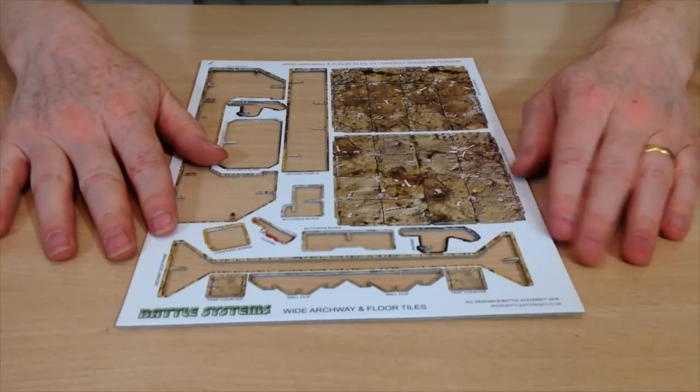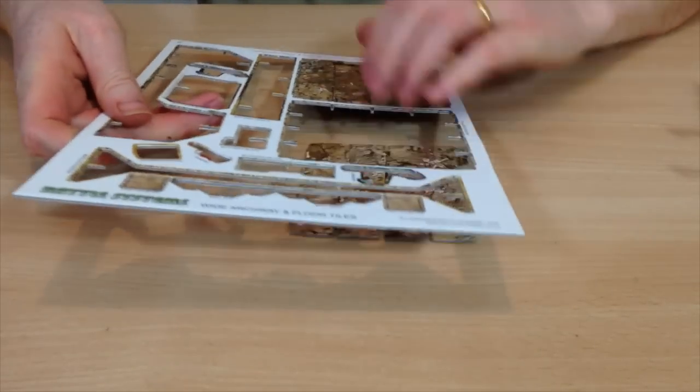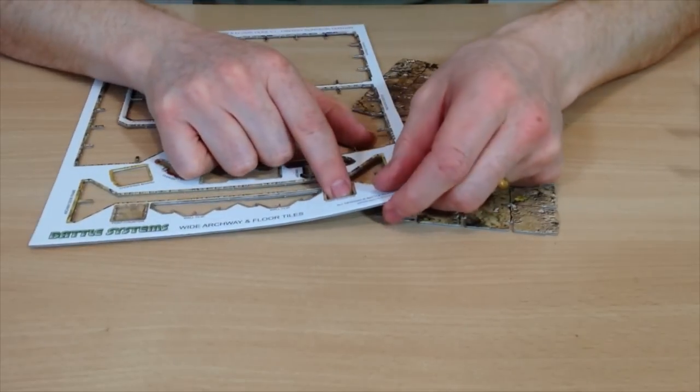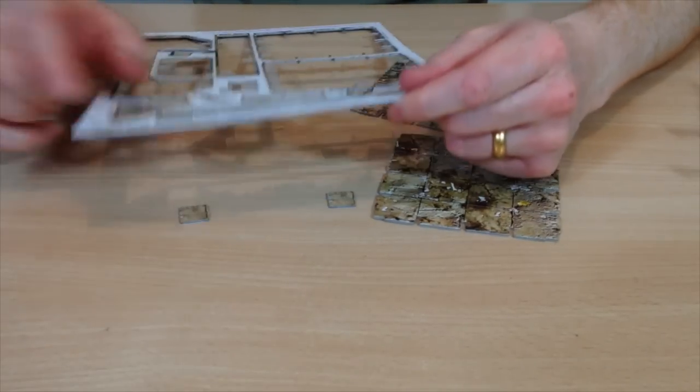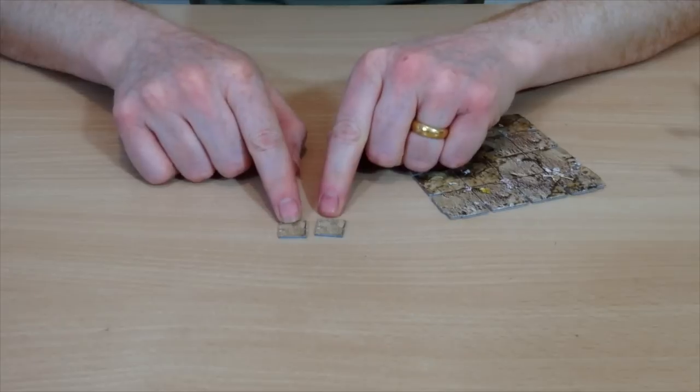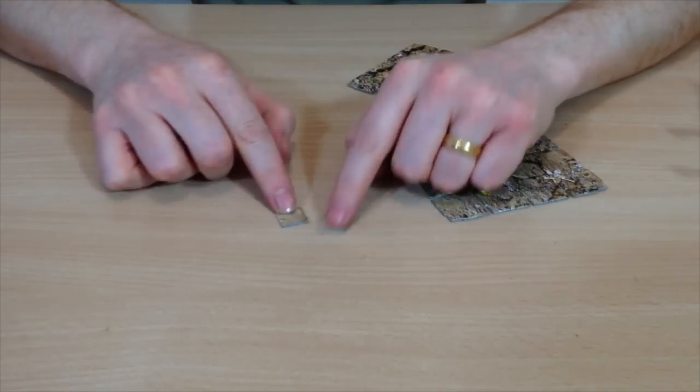All that leaves on here then are your bigger floor tiles which come in very handy. And actually because we had a little bit of space that we couldn't really do much with at all, we've got these two mini trap counters. One's trap, one is not, and that gives you something you can mess about with inside your dungeon.